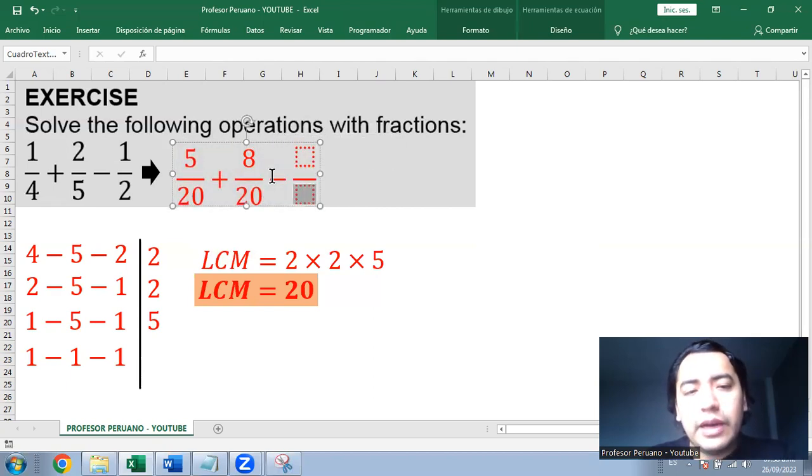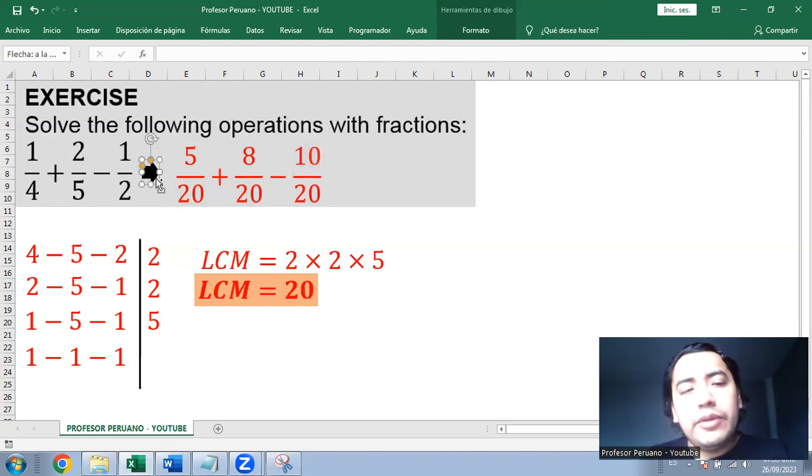And the last one is 1/2. We multiply by 10. So 1 times 10 is 10, 2 times 10 is 20. Now the fractions are homogeneous.